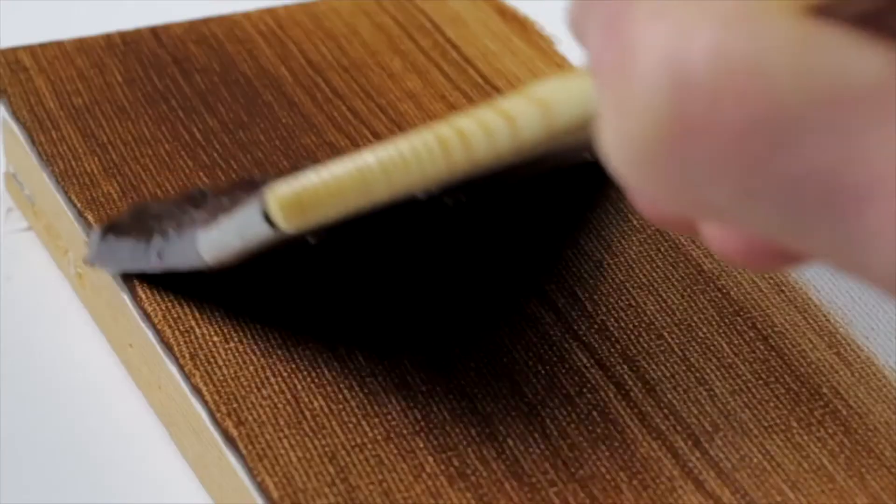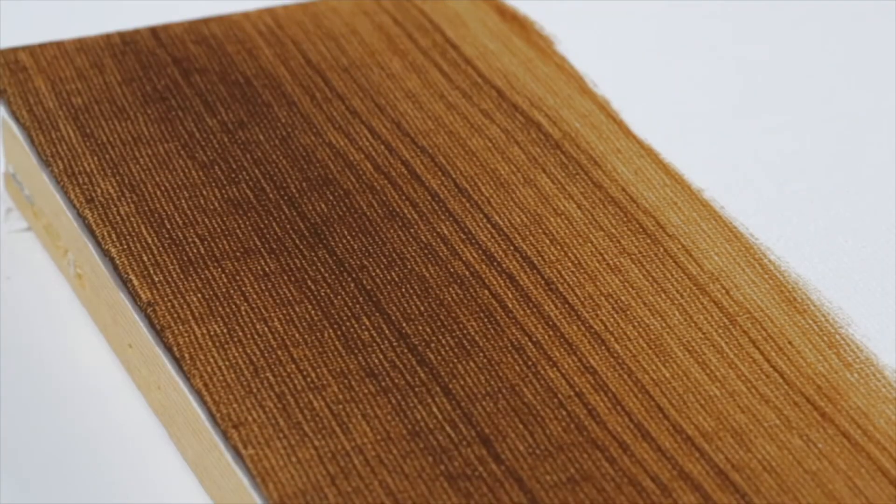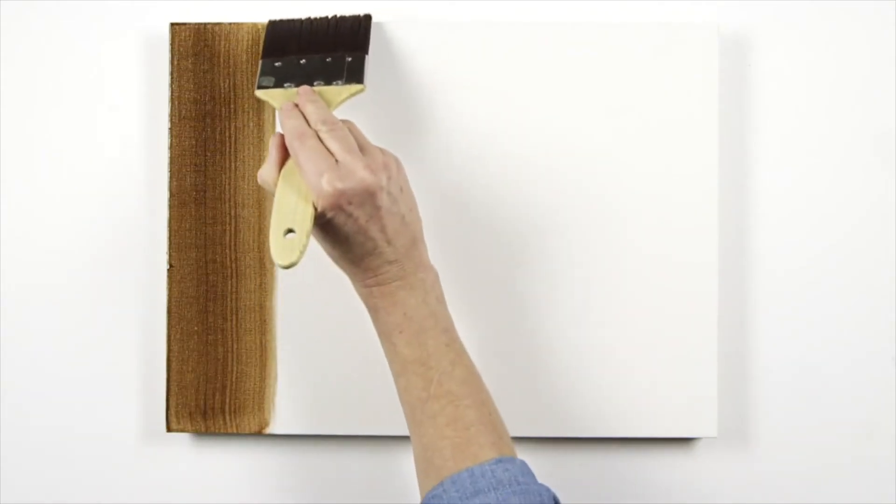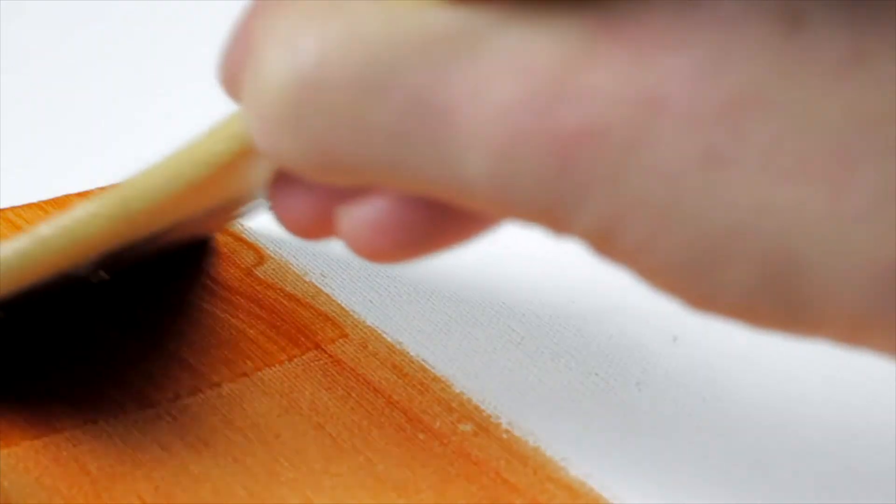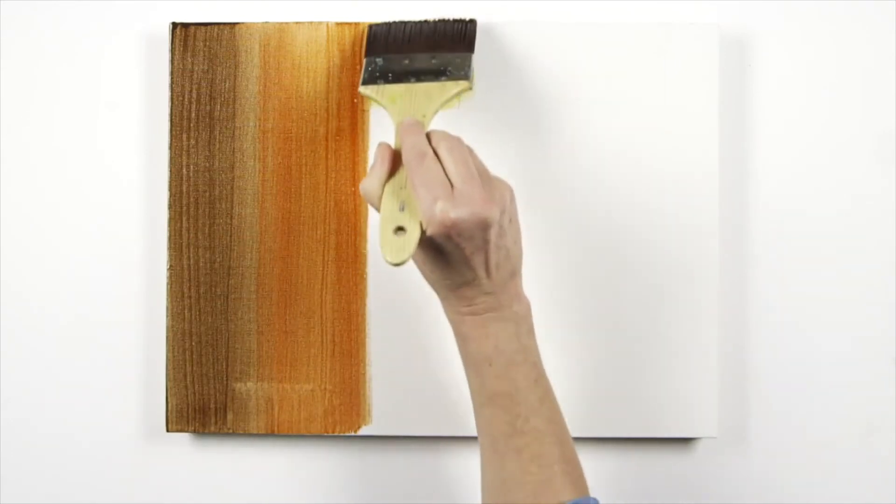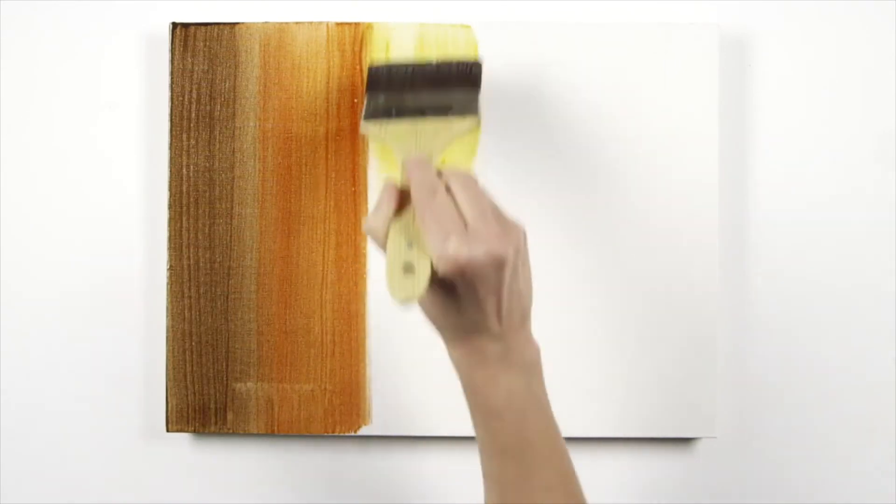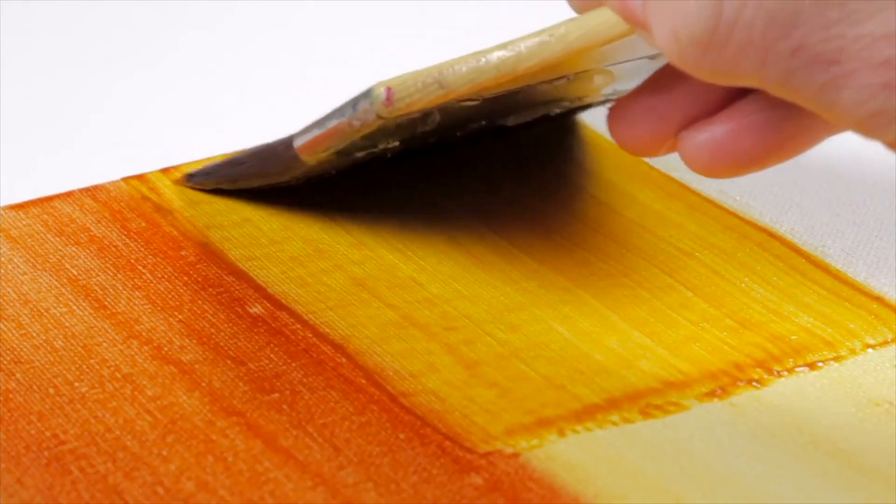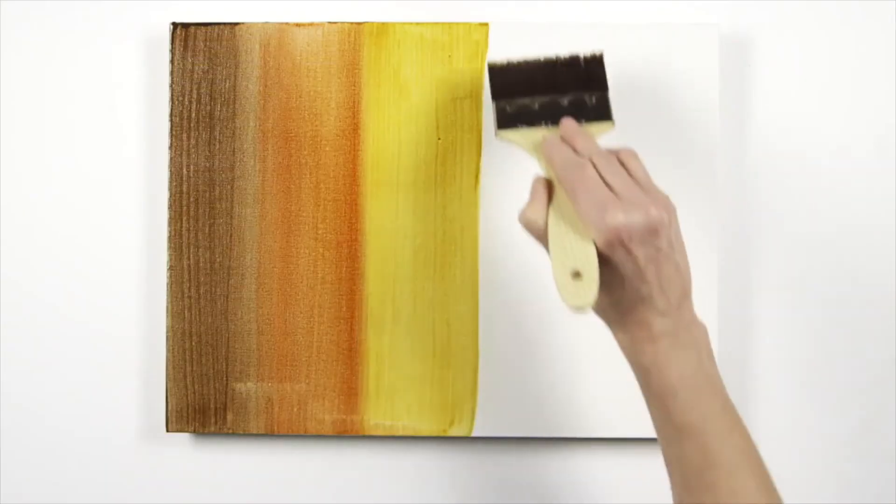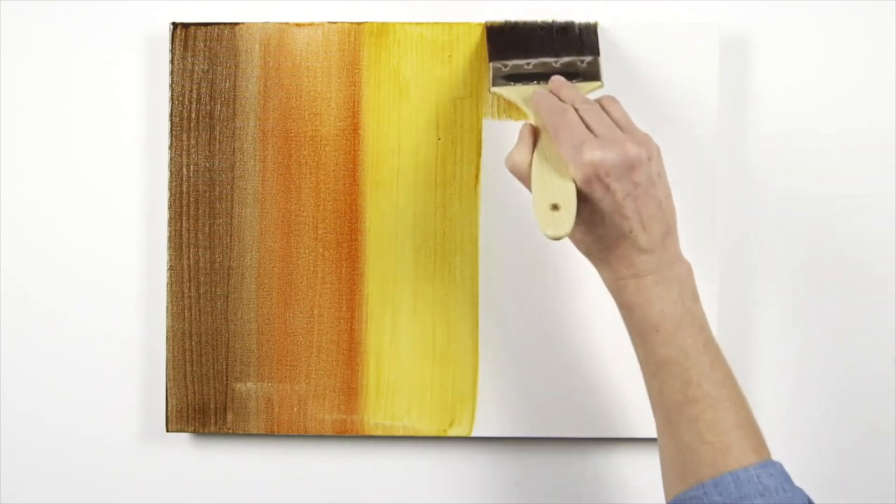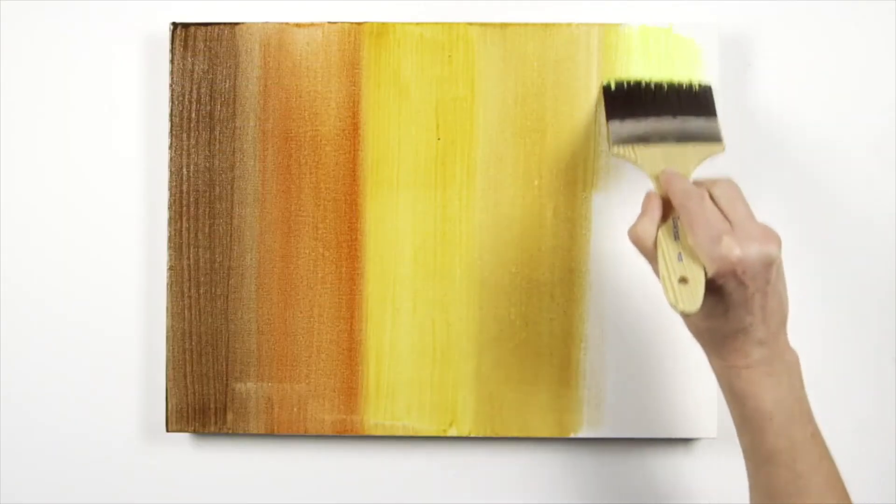First the raw umber burnt umber mix, blending into the burnt sienna, raw sienna, then your yellow ochre, adding clean medium as you go, and finally lemon yellow.